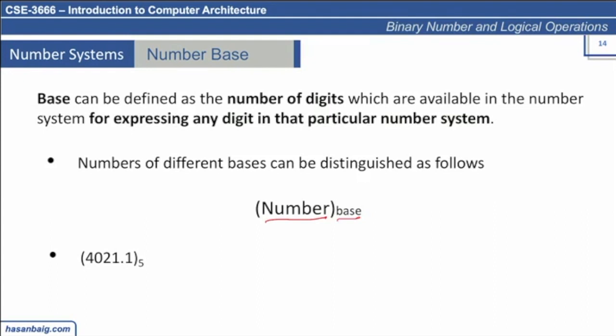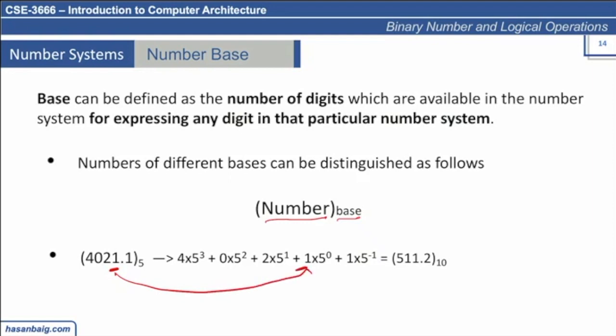In order to convert a base 5 number into decimal, we multiply each digit with the rising power of the base — so 5 to the power 0, 5 to the power 1, and so on. For the right-hand side of the decimal point, we use 5 to the power of minus 1, and so on. This is how it converts into an equivalent decimal value. So base 10 is referred to as the decimal number system, base 2 as binary, and base 5 has no particular name.